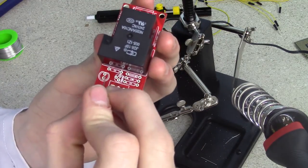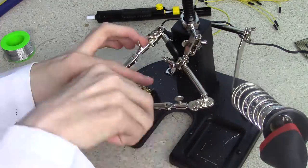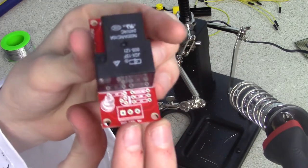Then, solder the LED into place next to the relay. Make sure it's facing the right way, flat sides, eye protection, yada yada yada, you know the drill by now.